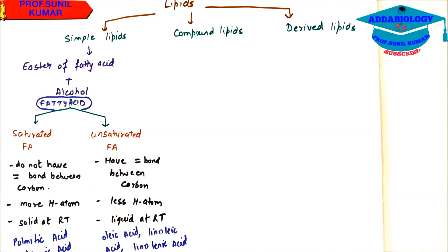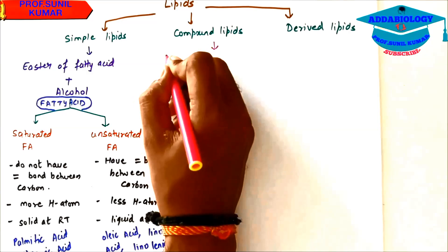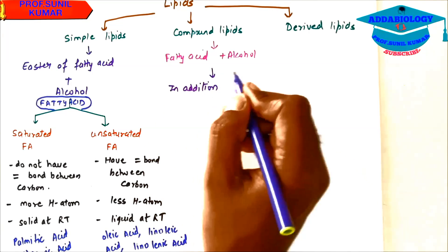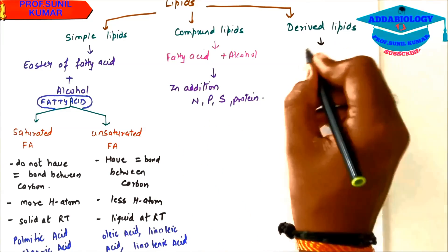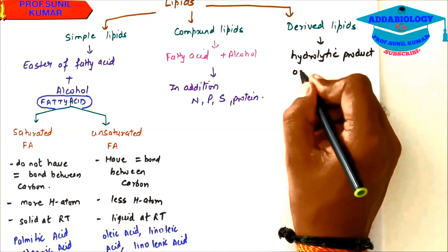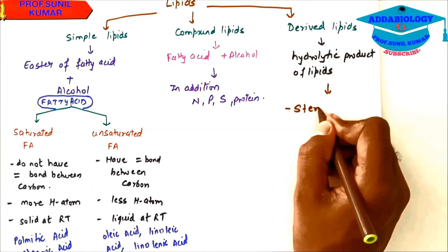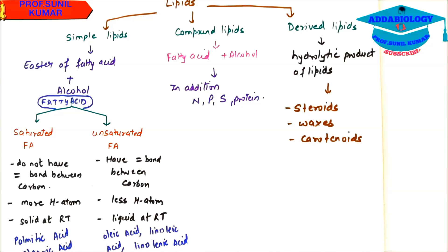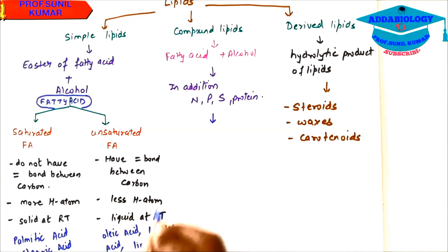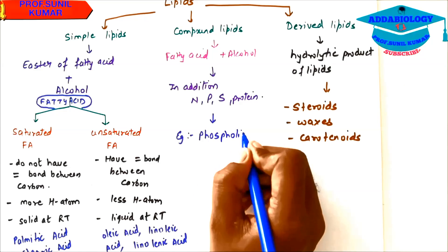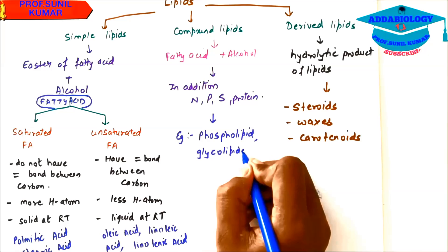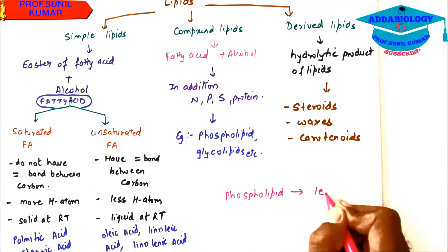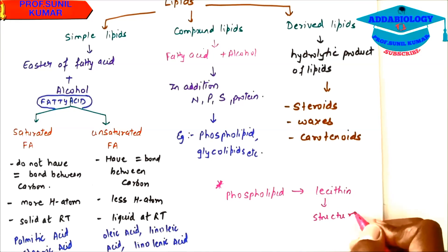When I talk about compound lipids, we need to understand it is made up of fatty acid plus alcohol, but along with these two components they also have nitrogen, phosphorus and sulfur or proteins. When we talk about derived lipids, they are hydrolytic products of simple lipids like steroids, waxes and carotenoids. Examples of compound lipids include phospholipids and glycolipids. Phospholipid simply means it has phosphate group along with the lipid. Phospholipid is also lecithin which forms the structure of cell membrane.